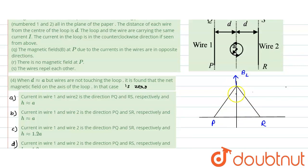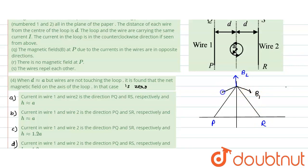How is this possible? It is only possible when due to wire one the magnetic field is in this direction — at some angle, because the magnetic field is always in the perpendicular direction. If both B1 and B2 are pointing upward, the net would be in the upward direction and cannot be zero. So we need to make it zero. We say magnetic field due to wire one, B1, should be in this direction, and due to wire two it should be in this direction. Then only their net resultant would be in the vertical direction and can cancel the magnetic field due to the loop.